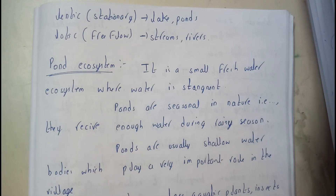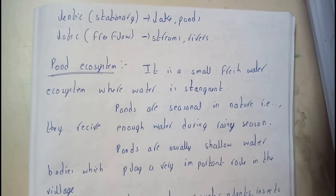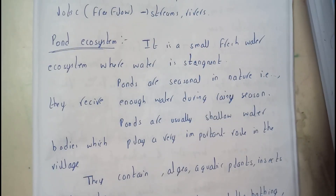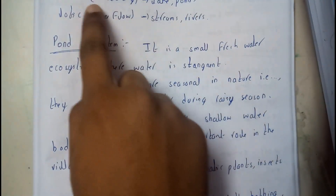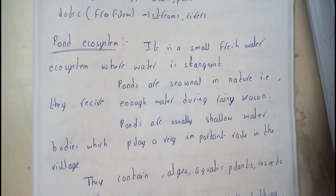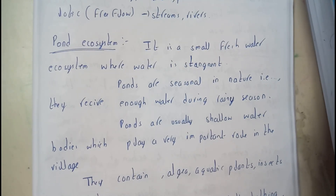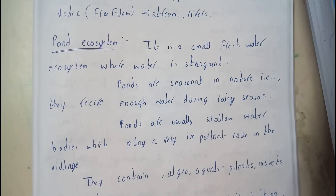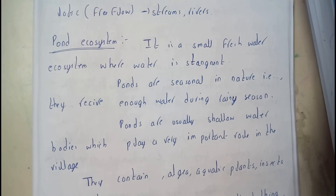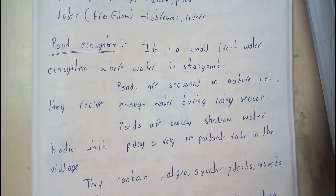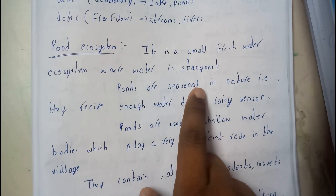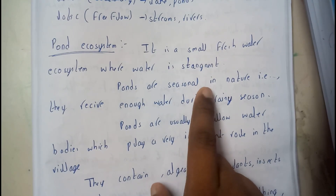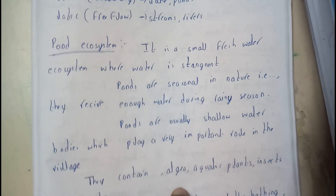Let's go in depth on these four topics. Let's start with pond ecosystem. Pond comes under lentic, which means stationary, so ponds are stationary places where water will not flow from one place to another. Pond ecosystem is a small freshwater ecosystem where water is stagnant, which means the flow of water is not possible.